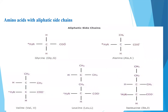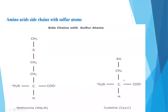Now we will see each amino acid depending upon the nature of its side chain. The first group is amino acids containing aliphatic side chains. Under that come five amino acids: glycine, which has only a hydrogen attached; alanine, which has a methyl group attached to the alpha carbon; and similarly valine, leucine, and isoleucine, which all have aliphatic side chains.